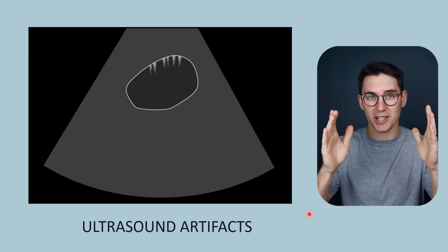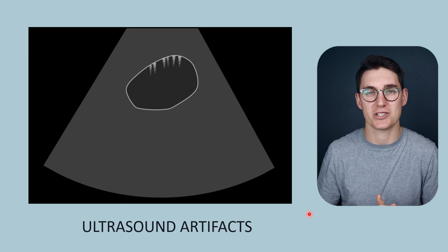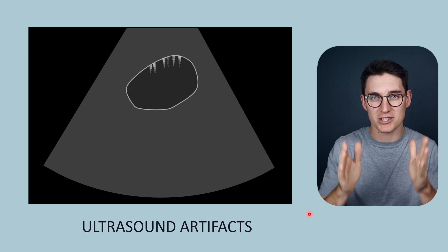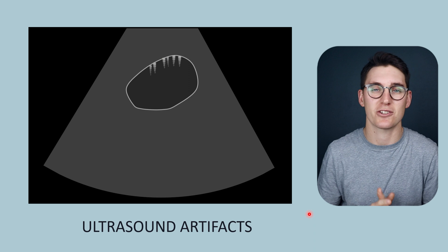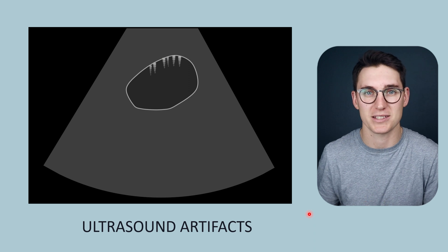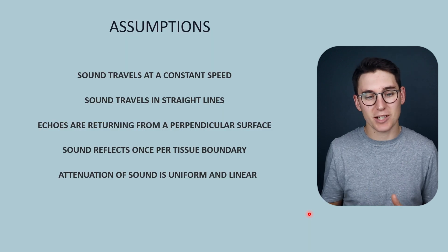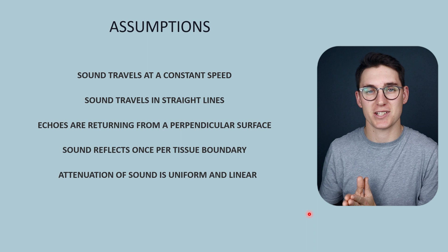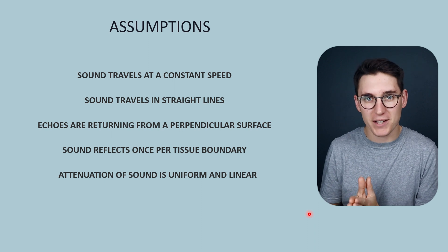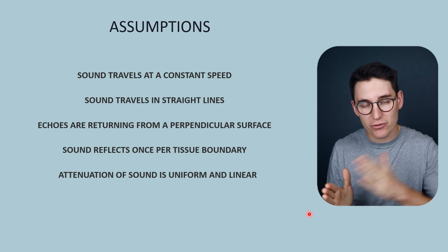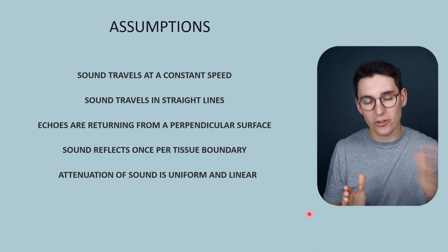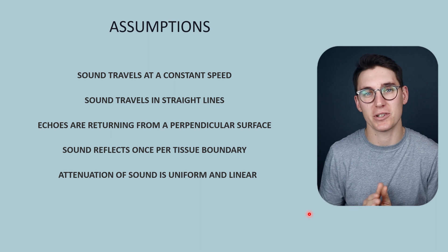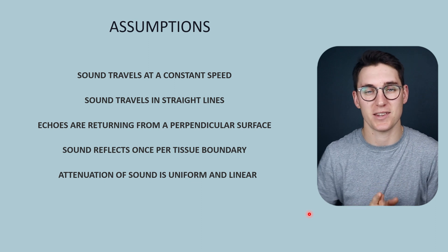Today we're going to be looking at B-mode ultrasound artifacts, and they all occur because of assumptions that the ultrasound transducer makes. These assumptions are crucial in order to actually create an ultrasound image, but they are actually false assumptions, and it's these false assumptions that lead to the development of artifacts within the image.